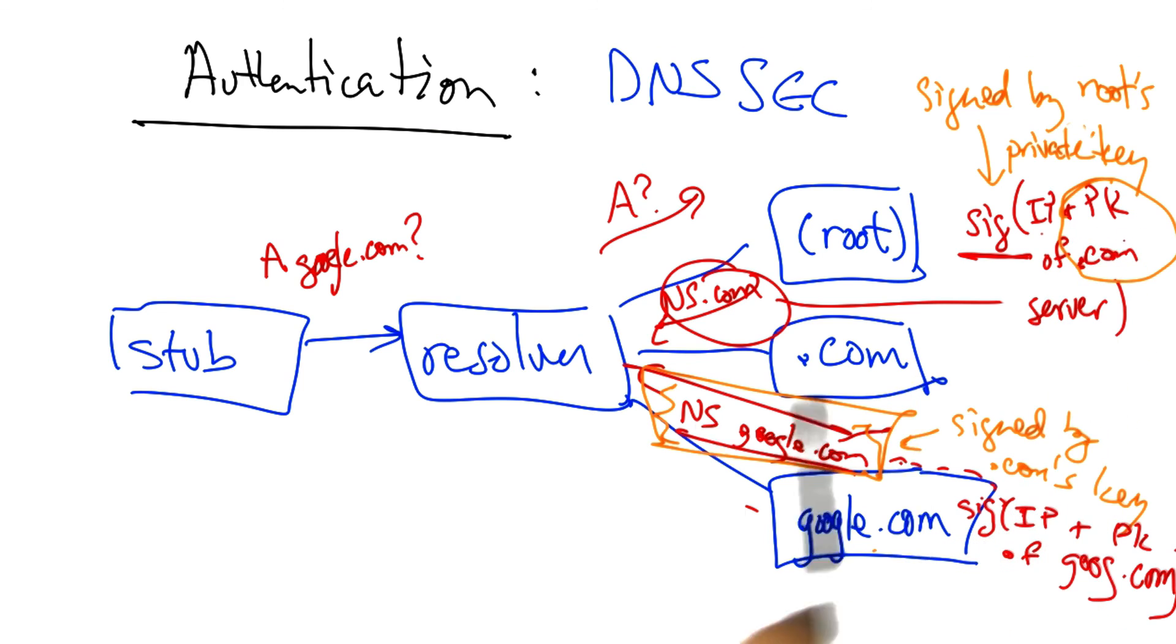That public key then allows the resolver to check the signatures at the next lowest level of the hierarchy until we finally get to the answer.